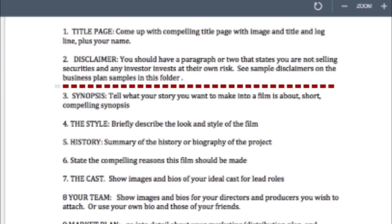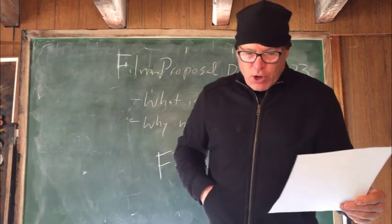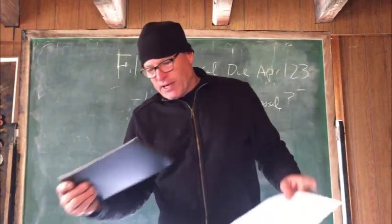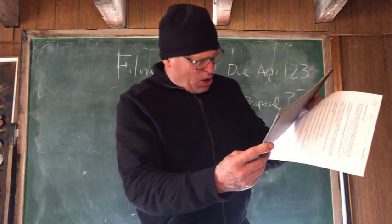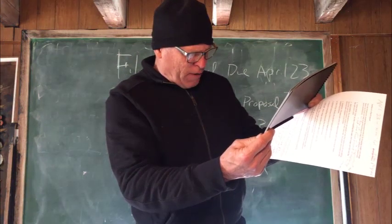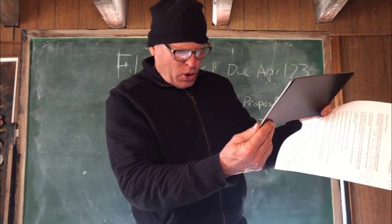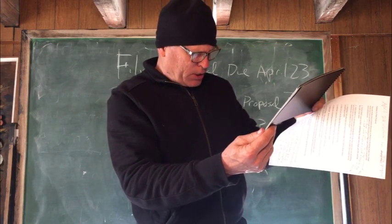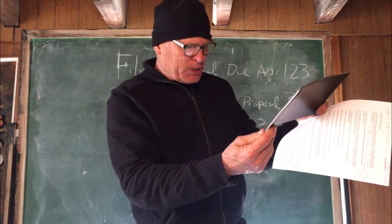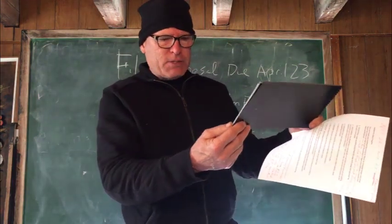Number two, disclaimer. You should have a paragraph or two that states you are not selling securities, and any investor invests at their own risk. See sample disclaimers on the business plan samples in the folder. On The Dying of the Light, the disclaimer was very small and on the front page, and it said: 'All contents of this presentation are for discussion purposes only and do not constitute a formal investment offering in whole or in part. All numbers, projections, and expectations contained herein are estimates only and should not be used for making any investment decisions.'